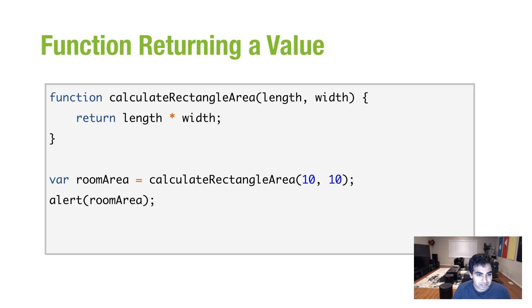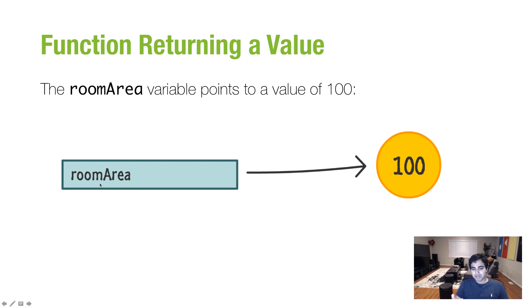In this case, I have a function called calculateRectangleArea. It takes two arguments, length and width, and returns their multiplication. So in this case, I have a variable called roomArea, and I'm initializing it to calculateRectangleArea and passing the arguments 10 and 10. Okay, so far so good. And then I have the alert statement that prints the value of roomArea. So given what this code does, passing in 10 and 10 multiplies that value together and returns it.